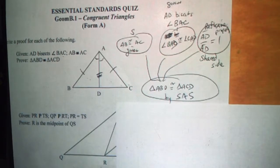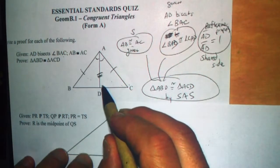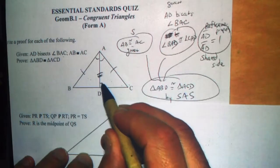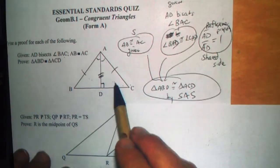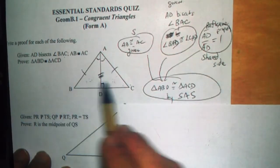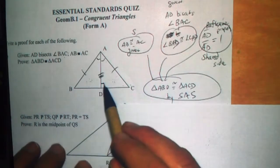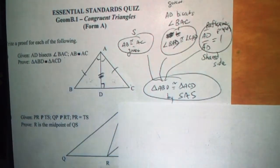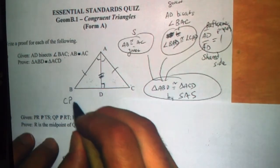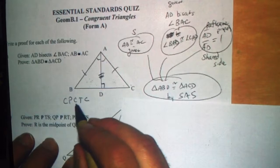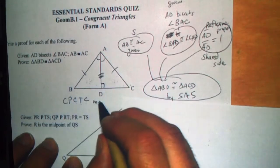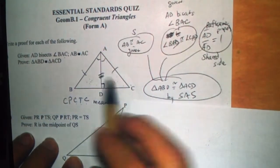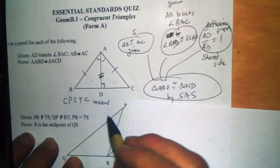All of that comes together to show that triangle ABD is congruent to triangle ACD by SAS, side angle side. Now, once you know the triangles are congruent, there's something called CPCTC — congruent parts of congruent triangles are congruent — which means we can conclude that the rest of the parts of those triangles are congruent as well.